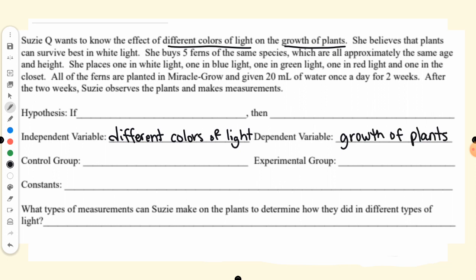She believes that plants can survive best in white light. She buys five ferns of the same species, which are all approximately the same age and height. She places one in white light, one in blue light, one in green light, one in red light, and one in the closet. All of the ferns are planted in Miracle-Gro and given 20 milliliters of water once a day for two weeks. After the two weeks, Suzy observes the plants and makes measurements.